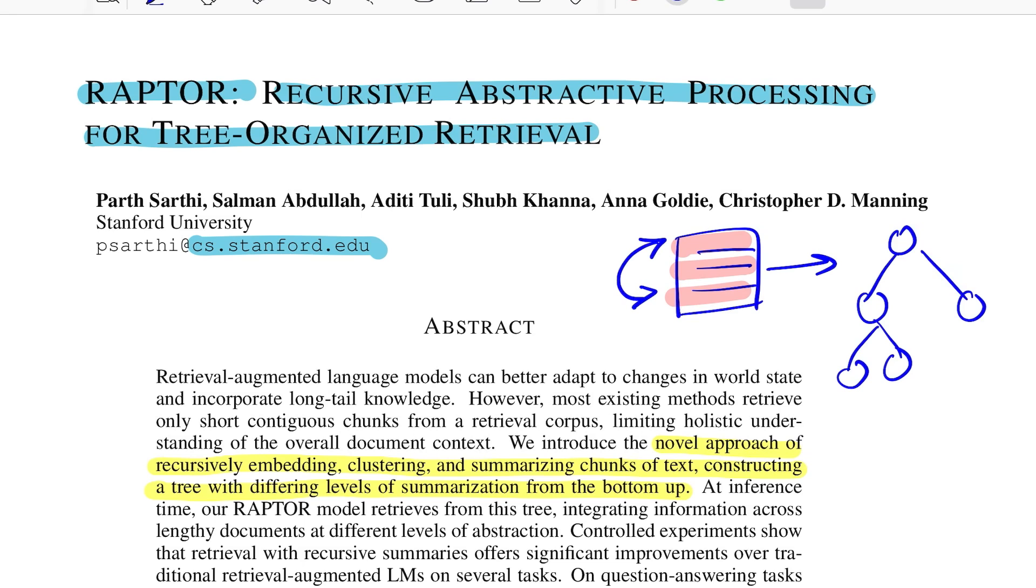Whereas with the approach that this paper proposes, they recursively embed, cluster, and summarize the piece of text and create a tree out of it at multiple levels. So as we go from bottom to top, the granularity of the information that we're trying to store in these nodes decreases, which means we have more holistic or coarser information that we store, whereas the leaf nodes specifically are most granular.